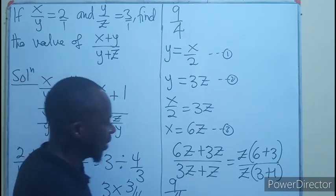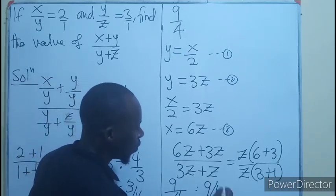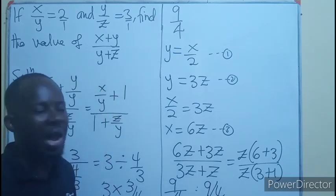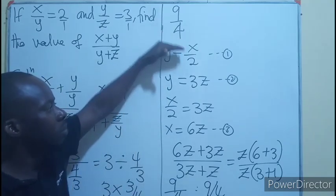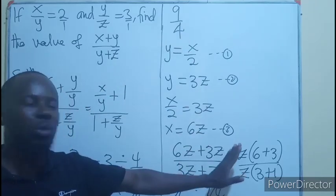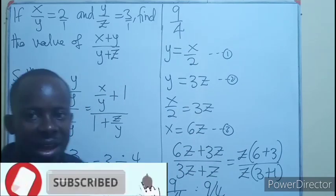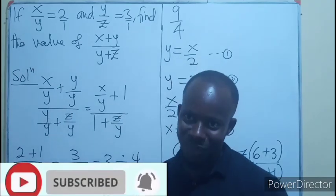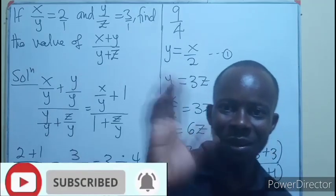That simply means that we still have 9 divided by 4 as our answer if we want to just make y the subject in the two equations and substitute, or before the first approach. Thank you for watching, like and share. Bye-bye.